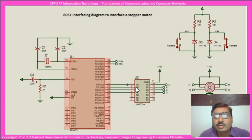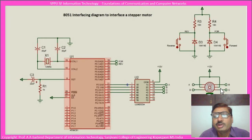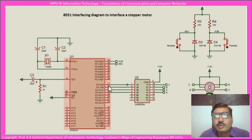Its function is just to increase the driving capacity. Otherwise, the voltage levels at the input are as-is transformed to its output. It has got four inputs and four outputs. The four outputs of the driver are connected to the inputs of the stepper motor. The stepper motor is interfaced using port 2 — four lines of port 2 are used here.